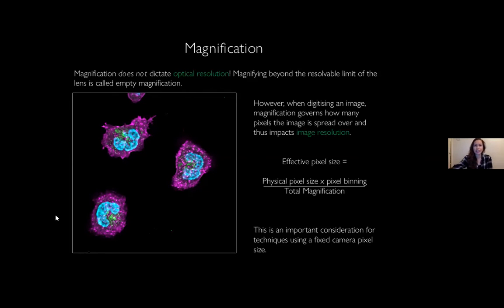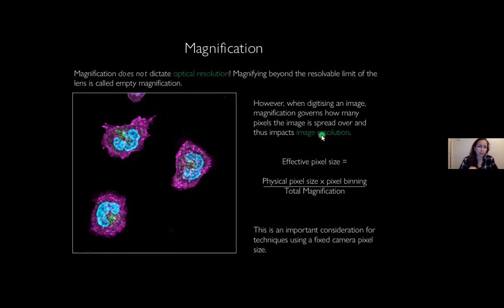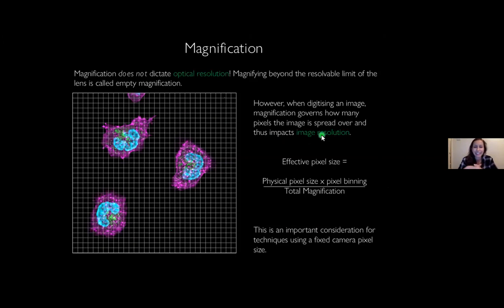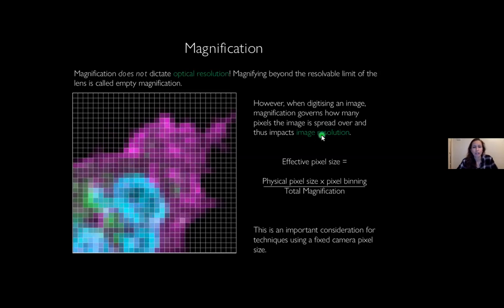Where confusion might arise is that although magnification does not govern optical resolution, it does impact the effective pixel size of a digitized image and therefore the image resolution. Image pixel size is simply the physical size of a camera pixel — accounting for any binning — divided by the total magnification. If we magnify a smaller region over the same number of pixels, we improve the image resolution, but this only improves up until the point where we meet the optical resolution. After this, there's nothing further to be gained by magnification. You can learn more by following the tea break talk on Nyquist sampling.